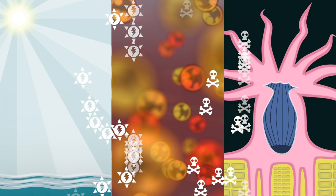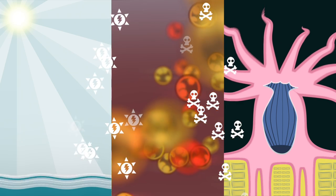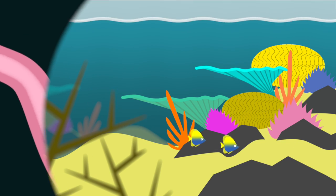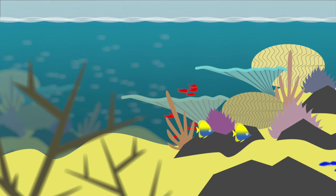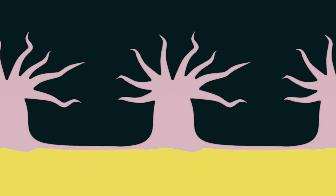When the zoanthalae becomes stressed they don't convert sunlight to energy efficiently anymore. They end up producing chemicals that are toxic to the coral and the polyps kick the zoanthalae out. If this goes on long enough all the zoanthalae will be expelled and the coral turns a bleached white. Without their food source the polyps will starve.